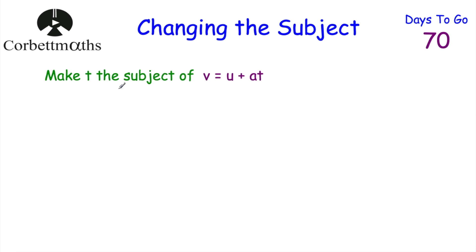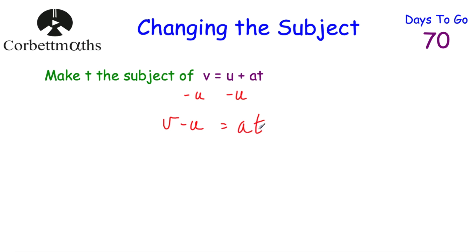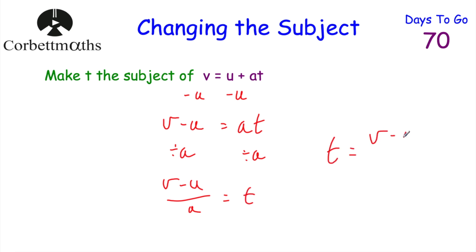Here's a question for you to try yourself: make T the subject of V = U + AT. Have a think, press pause and try it yourself. To make T the subject, the first thing is to subtract U from both sides, giving V − U on the left and AT on the right. Then divide both sides by A — the right-hand side gives just T, and the left gives (V − U) / A. So T = (V − U) / A.